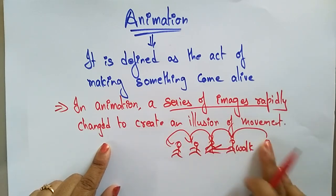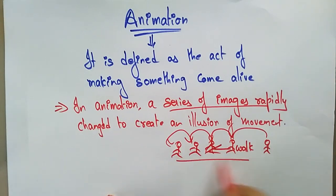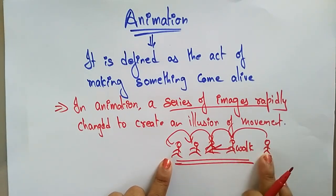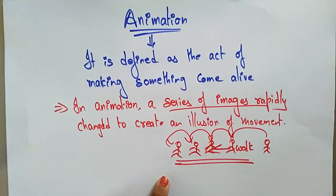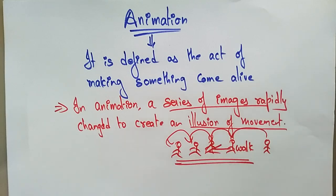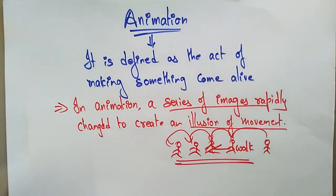To create an illusion of movement, I just created a series of images and added them to the current picture, so that it creates an illusion that the person is moving — it's just an illusion of movement, that is animation. So to create an animation you have to make a series of images and rapidly change them to create an illusion of movement. Animation is defined as the act of making something come alive, by making a series of images that rapidly change.